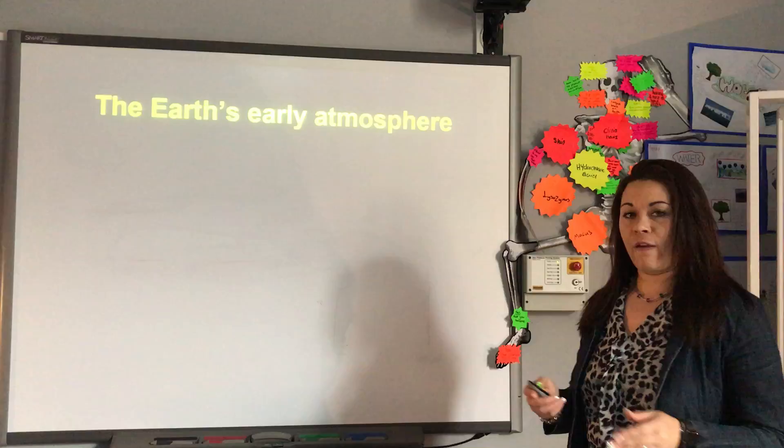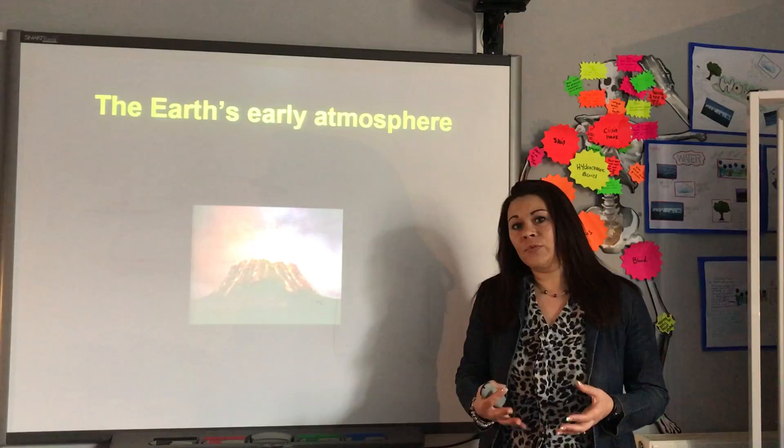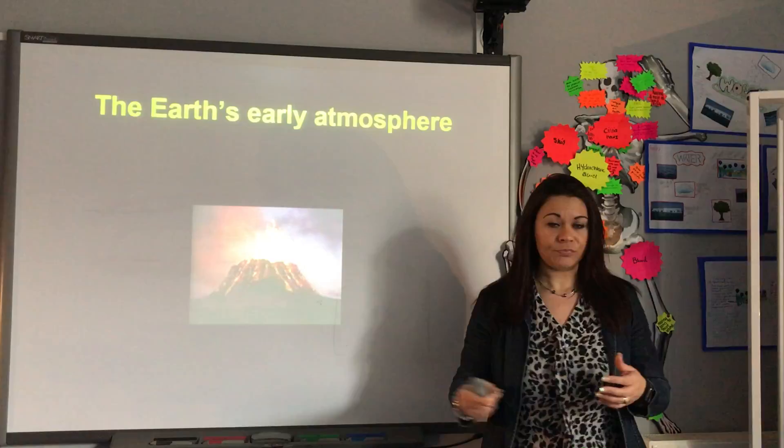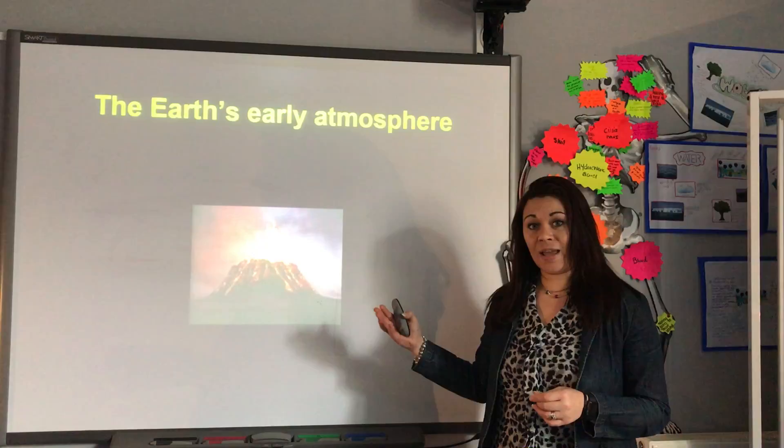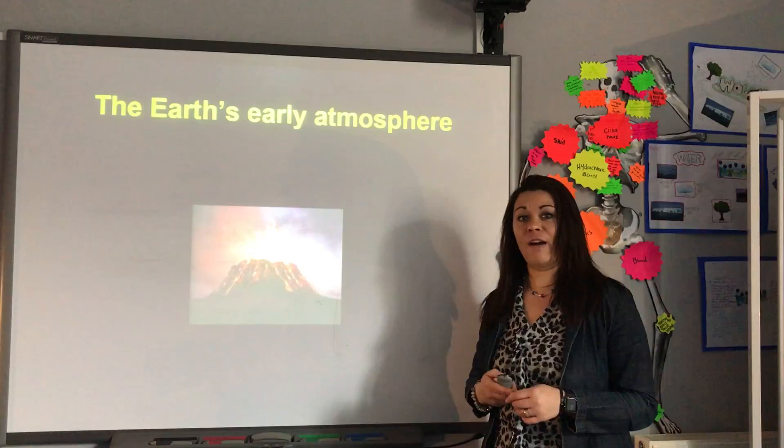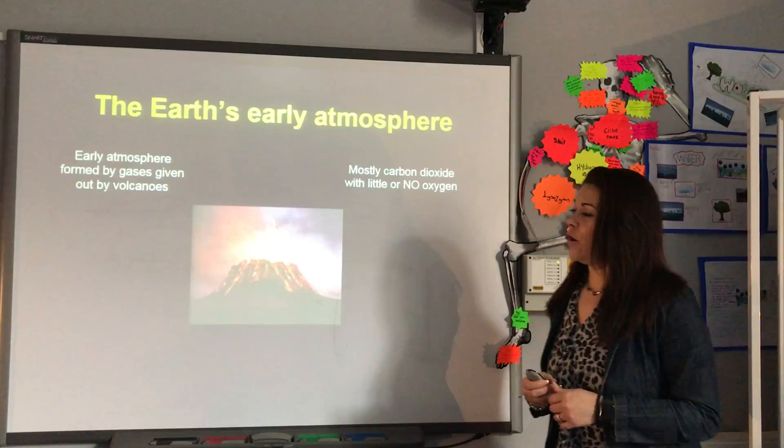We need to look at the early atmosphere. Around 4.5 billion years ago, we believe that when the Earth was formed, the atmosphere — the gases that surround the Earth — were formed by volcanoes. People weren't around then; there was no life on Earth at this time, so it's difficult for us to know exactly what the atmosphere was like. We look at the gases given off by volcanoes today to give us an idea of what gases formed the atmosphere 4.5 billion years ago.